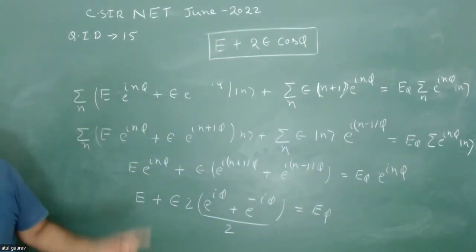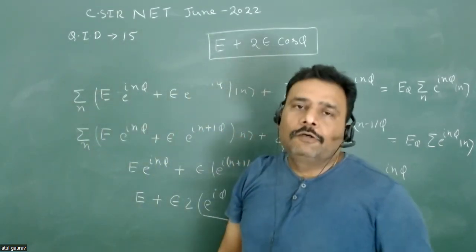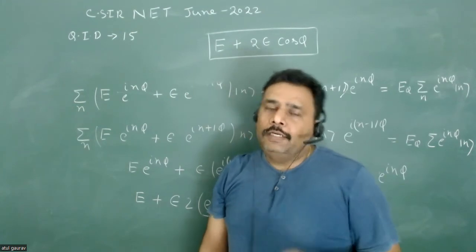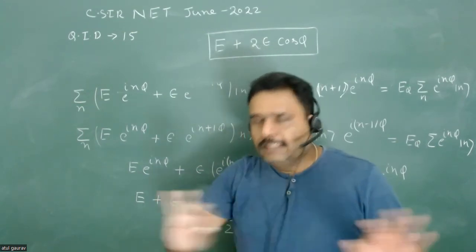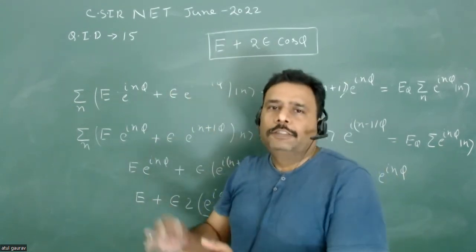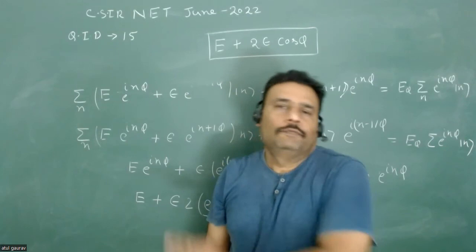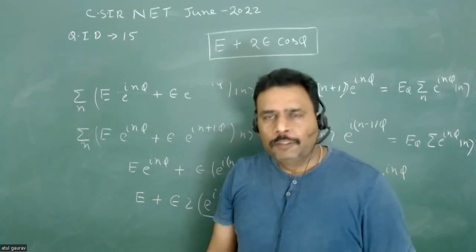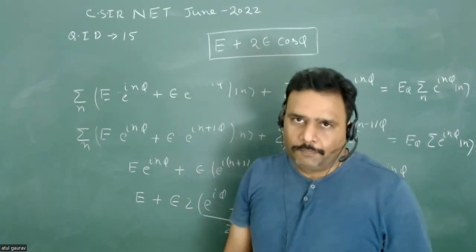The final answer is E_φ = e_n + 2ε cos(φ). This is the eigenvalue corresponding to the eigenfunction |φ⟩. It's a wonderful problem that tests not only quantum mechanical concepts but also your ability to handle series and index shifting, which is why it is one of the best problems ever asked in a quantum mechanics examination.